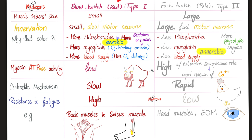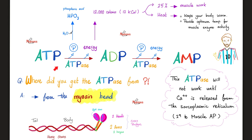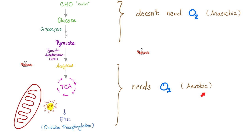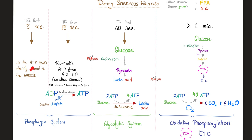Muscle metabolism depends on the type of the muscle. Your muscles need ATP — the energy currency in your cell. To liberate the energy of ATP, you need to break it down via ATPase, found in the myosin head. Your muscle needs oxygen for aerobic metabolism. Without oxygen, you shift to anaerobic glycolysis and will not make as many ATP molecules. During strenuous exercise: in the first 5 seconds, your muscle uses ATP. In the first 15 seconds, your muscle needs creatine kinase or creatine phosphokinase. These two together are the phosphagen system.